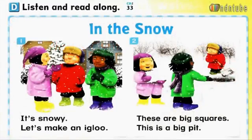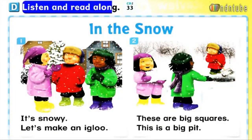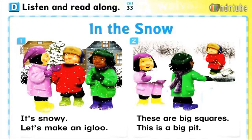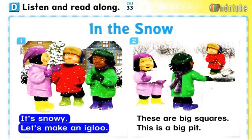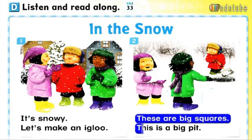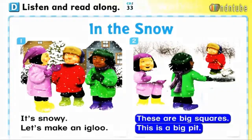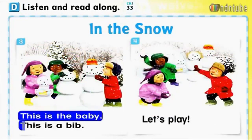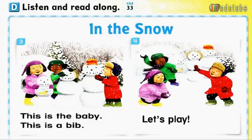Page 55. D. Listen and read along. In the Snow. One: it's snowy, let's make an igloo. Two: these are big squares, this is a big pit. Three: this is the baby, this is a bib. Four: let's play.